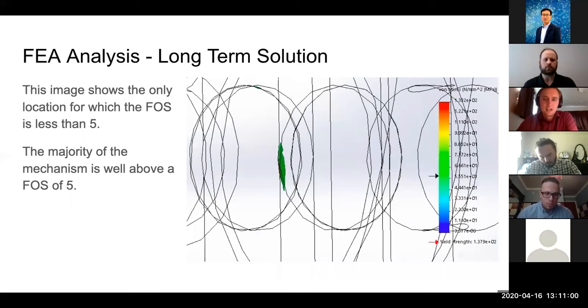Here you can see an image that shows all of the stresses in the component in the mechanism that produce a factor of safety less than five. It's just this small sliver of the pin that prevents the mechanism from having a factor of safety greater than five.